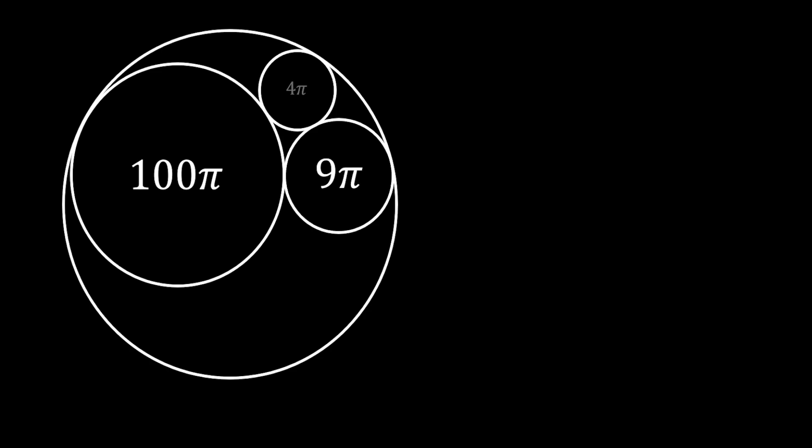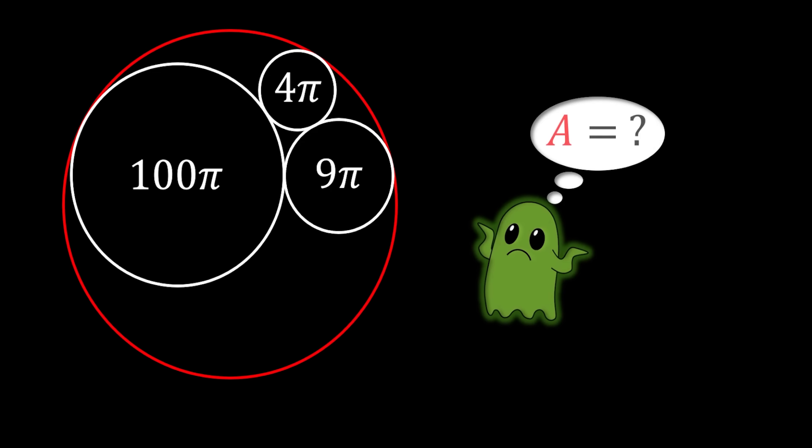We're going to start our problem with a circle. Inside this circle, we are going to put three other smaller circles that are touching each other and also touching the big circle, as you can see on the sketch. If the areas of those three circles are 100π, 9π, and 4π square units, can we somehow calculate the area of our big circle?